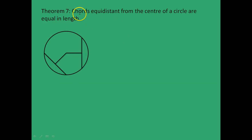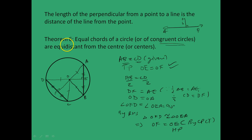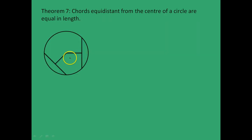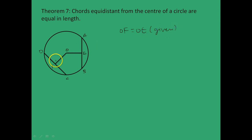Next, Theorem 7: chords equidistant from the center of a circle are equal in length. This can be considered the converse of Theorem 6. So with center O, points E and F as feet of perpendiculars, and chords AB and CD, we are given OF equals OE. Since we are talking about distances, these two angles are 90 degrees. We have to prove that AB equals CD.